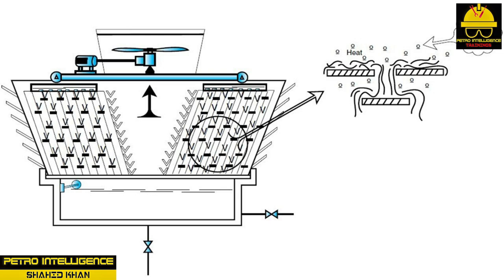Evaporation accounts for 80 to 90% of the heat transfer in a cooling tower. This convective process takes place as the hot water cascades down the fill or splash boards. As the hot water spreads out across the fill, air flows over the area. The rising hot water vapor or heat energy is carried out of the cooling tower, and the cooler water drops down into the water basin.